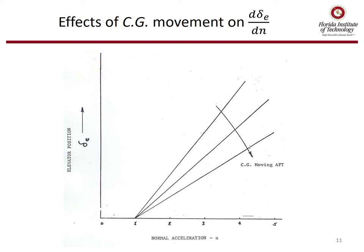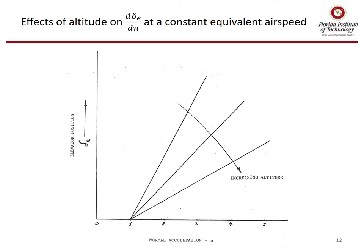Let's examine the effects of CG movement on the slope d(delta_e)/dn. As we move the CG aft, the slope reduces and eventually reaches a point where the slope is zero. Now let's examine the effects of altitude on our slope at a constant equivalent airspeed. The DCM-DCL term doesn't really depend on altitude, so it doesn't change. But our damping term is affected by density and thus decreases with increasing altitude.